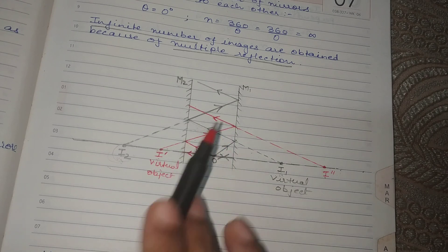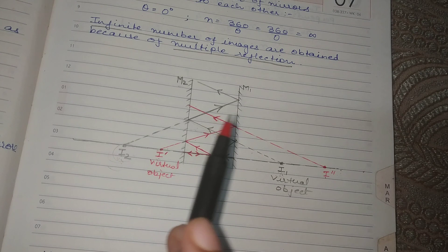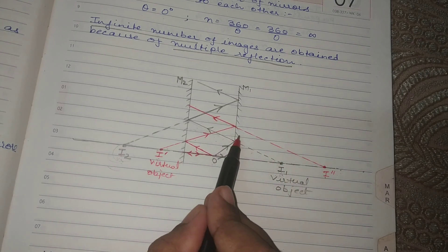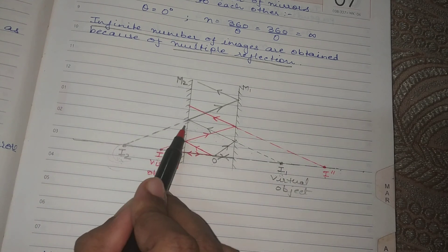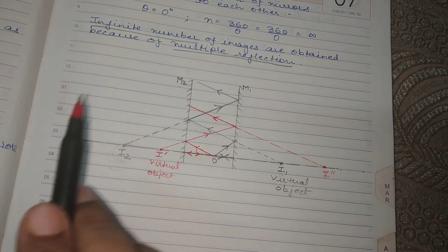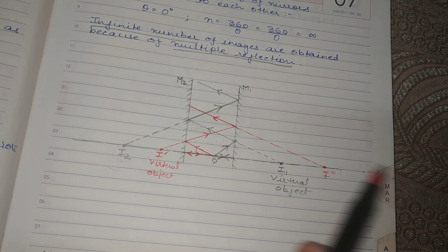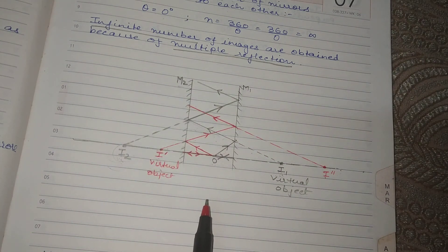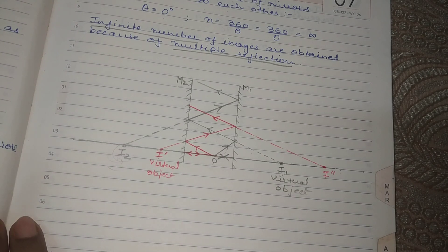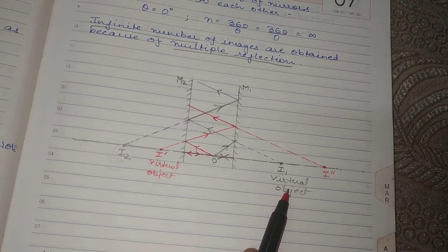To conclude: we used the image of the first mirror as the object for the second mirror, and the image of the second mirror as the object of the first mirror. This same concept applies every time we have more than one mirror and multiple reflections take place. The image of the first mirror acts as the object for the second mirror — but these objects, which are actually images, are considered virtual objects. Virtual means the one which is not actually present; it is not real.